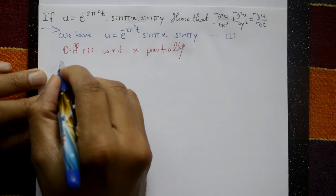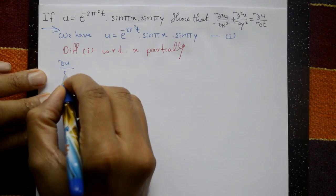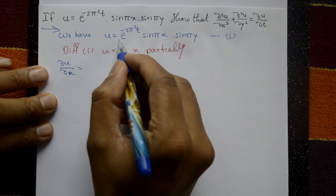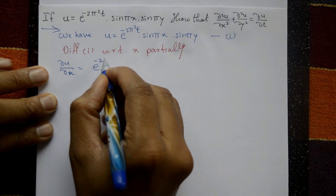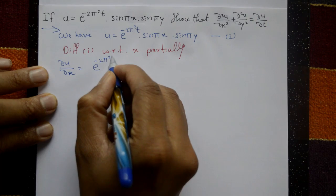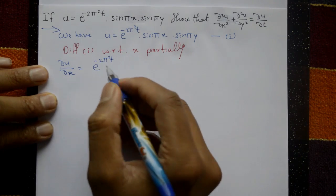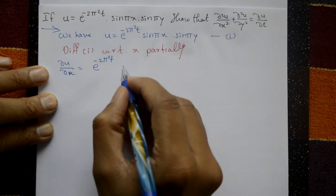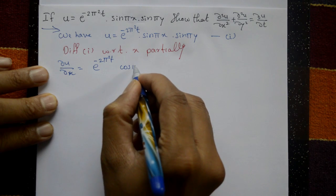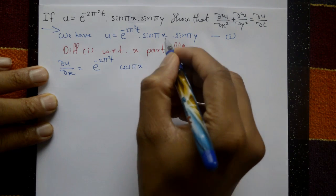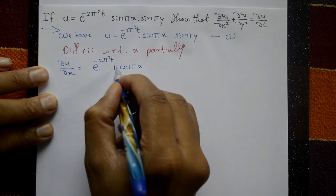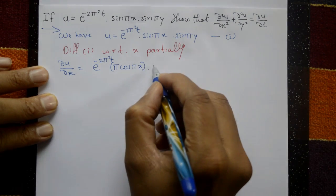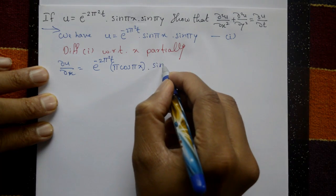∂u/∂x: e^(-2π²t) is a constant. With respect to x, differentiate sin(πx) to get cos(πx), then multiply by π from the chain rule. sin(πy) is a constant as it is.